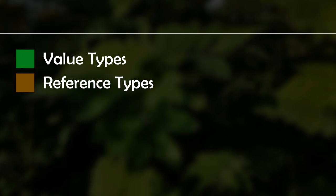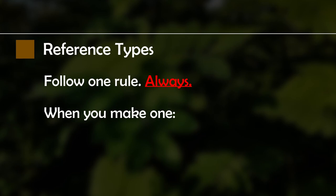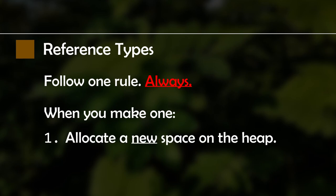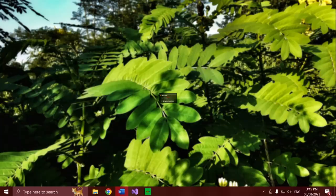What does it mean for something to be a value type versus a reference type? To answer that, we have to take a closer look at how these two categories behave in memory, and I'm going to start with reference types first. Reference types follow one rule — remember this well. When you make a new reference type, say we make a new class, it allocates a space on the heap to hold the type's data, and puts a reference — a pointer — to that space where you put the class.